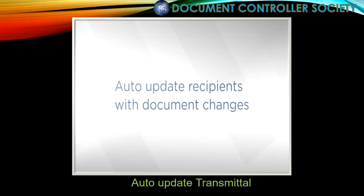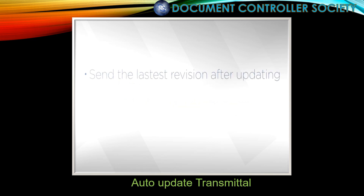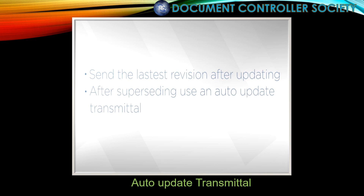Hi, I'm Tref Gare. Today I want to talk to you about the auto-update transmittal feature in Aconex. When you update documents in your register, you want to be sure that previous recipients of these documents can also get access to the new revisions. After you've superseded a document, use an auto-update transmittal to send this latest revision. You'll see a list of organisations and users who've received previous revisions, and you can choose to exclude some of them from receiving this update if you need to.